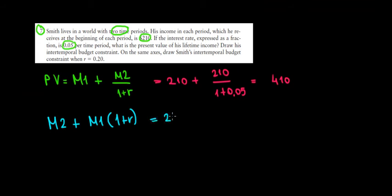So that would be $210 in the second period, plus $210 from the first period, times 1 plus 0.05. And if we do the math over here, that would be $430.5.